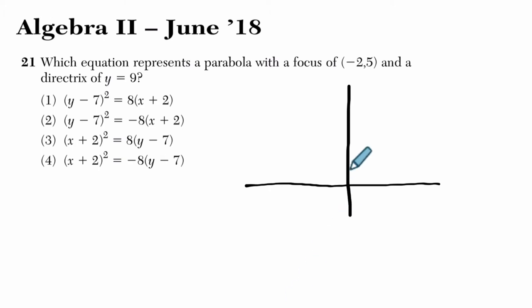Okay, so what are they telling us? They're telling us that the focus is at (-2, 5): 1, 2, 3, 4, 5. And the directrix is up here at 9, so 6, 7, 8, 9. So this is our directrix.